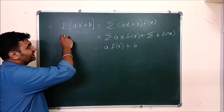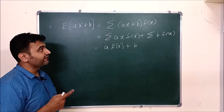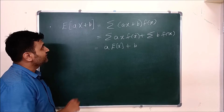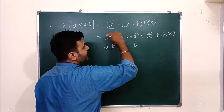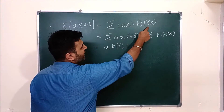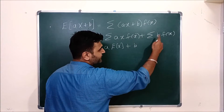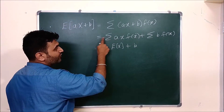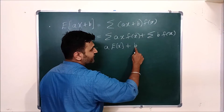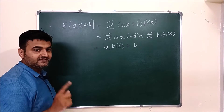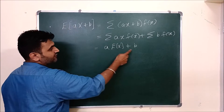The first property: what is the expected value of aX plus b? If X is a random variable, then E[aX+b] equals — using the definition, for the discrete case it is a summation, for the continuous case it is an integration. You take f(x) inside and split: take a outside, getting summation x·f(x) which is E[X], and take b outside, getting summation f(x) which equals 1, since the sum of all probabilities is always 1. So E[aX+b] = a·E[X] + b.